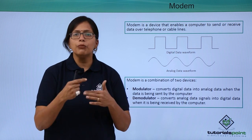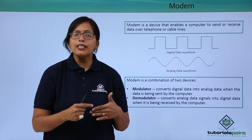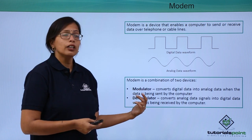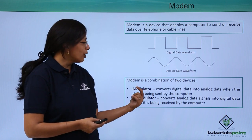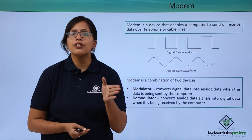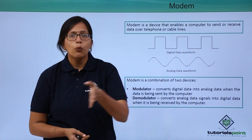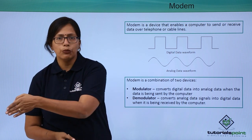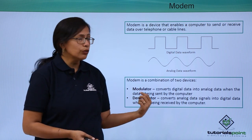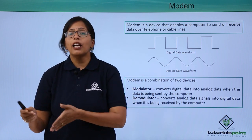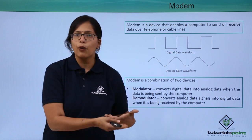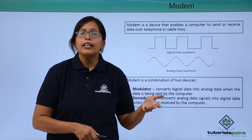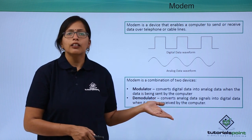This is where the modem comes in. Modem is actually a combination of two devices: a modulator and a demodulator. The modulator converts digital data into analog data when the computer is sending information over the network. The demodulator receives analog data from the network and converts it into digital data so that it can be read by the computer.